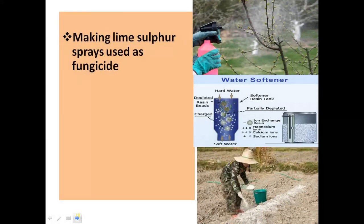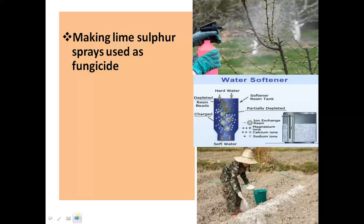The next use of calcium hydroxide is as a fungicide. Fungicides کیا ہوتے ہیں — جو fungus کو kill کرتے ہیں۔ ایسے chemicals جو fungus کو kill کرتے ہیں انہیں ہم fungicides کہتے ہیں۔ Lime sulfur spray کو fungicides کے طور پر استعمال کیا جاتا ہے اور اس میں calcium hydroxide استعمال ہوتا ہے۔